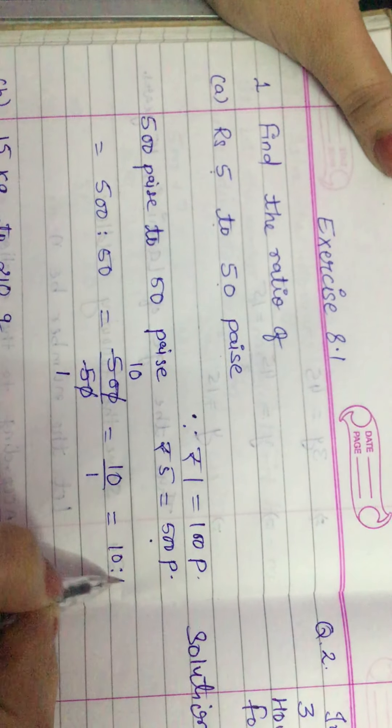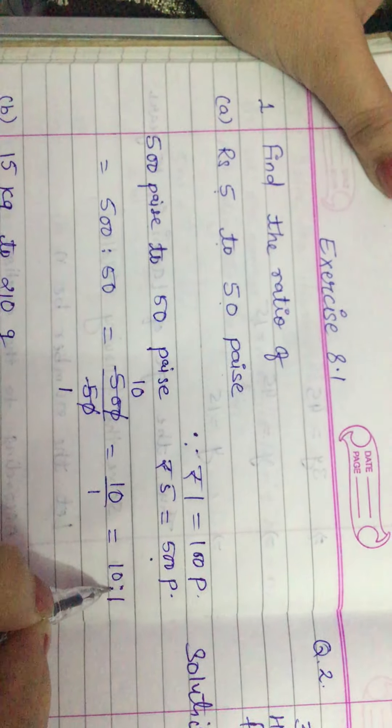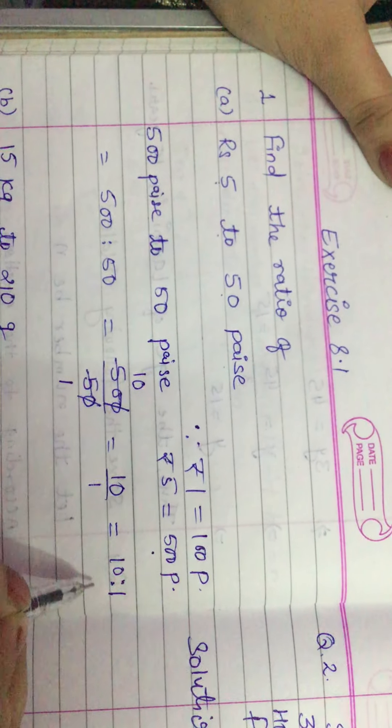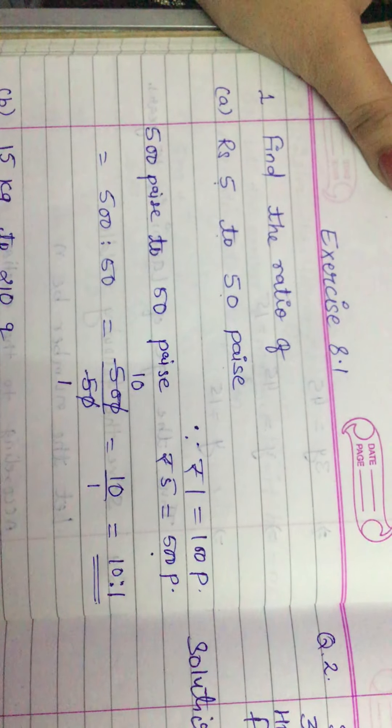10 by 1 we can write as 10 is to 1. It is a symbol of ratio. So our answer is 10 ratio 1. Now see the second question.